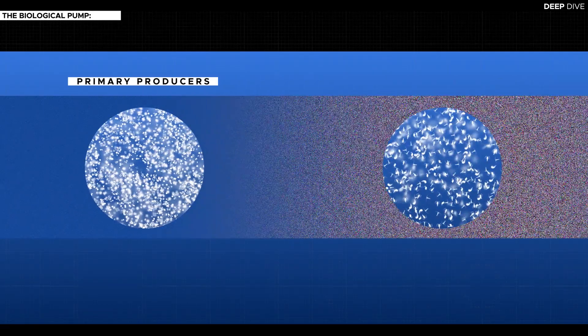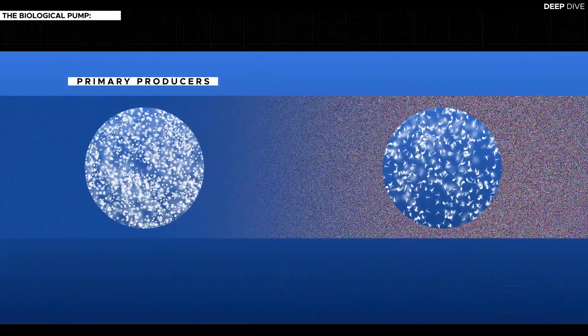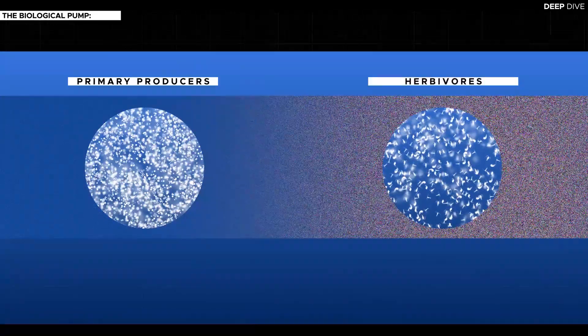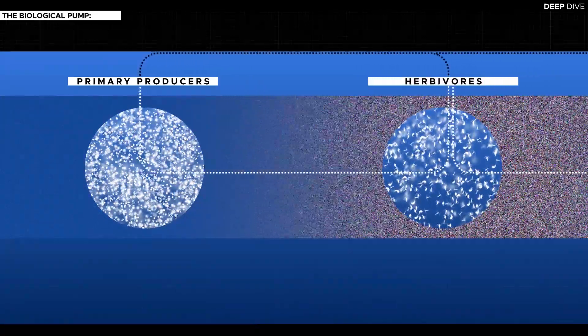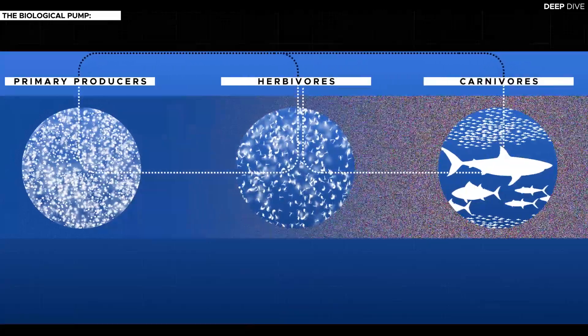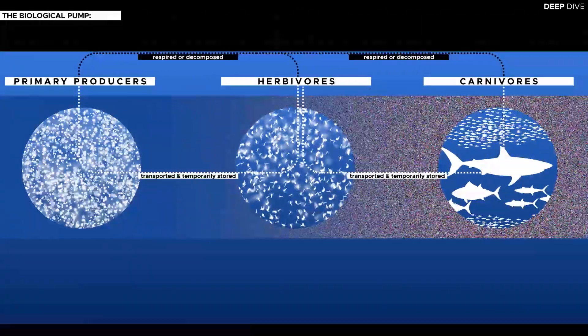From here, the carbon enters the food chain, first consumed by tiny crustaceans and other forms of zooplankton, the herbivores of the ocean, and then by a continuous number of larger and larger predators. In this way, the carbon is stored for months, years, and decades.